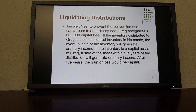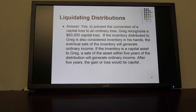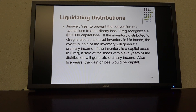Somewhere down the line, if he sells it as an ordinary income asset, not only did he get a capital loss instead of an ordinary loss originally, but when he eventually sells this inventory, his income is going to be ordinary, not capital. With the IRS, as you've seen before, it's heads the IRS wins and tails the taxpayer loses — not a big surprise.